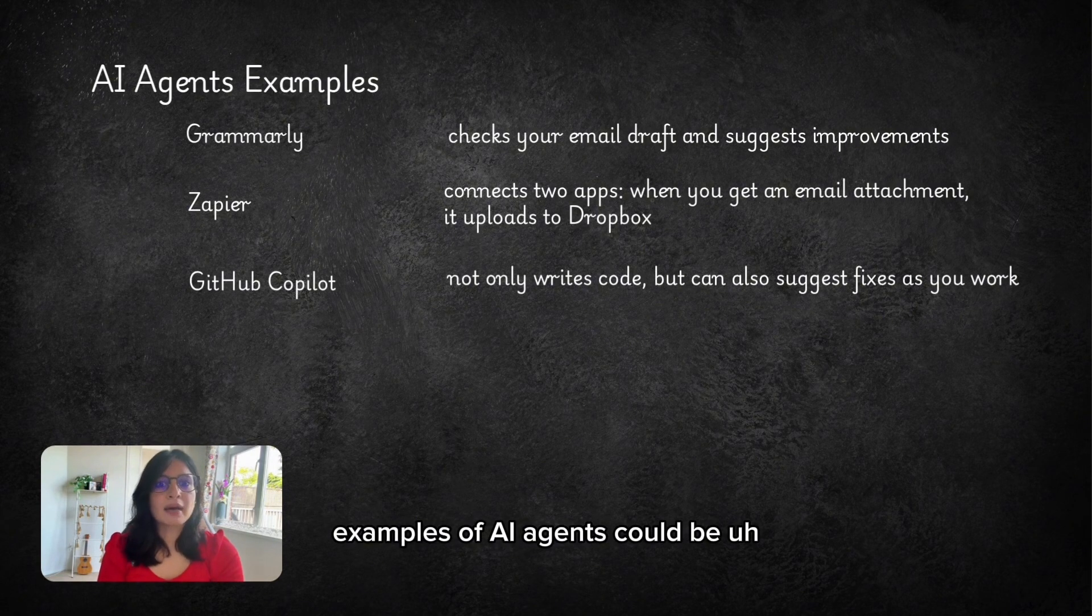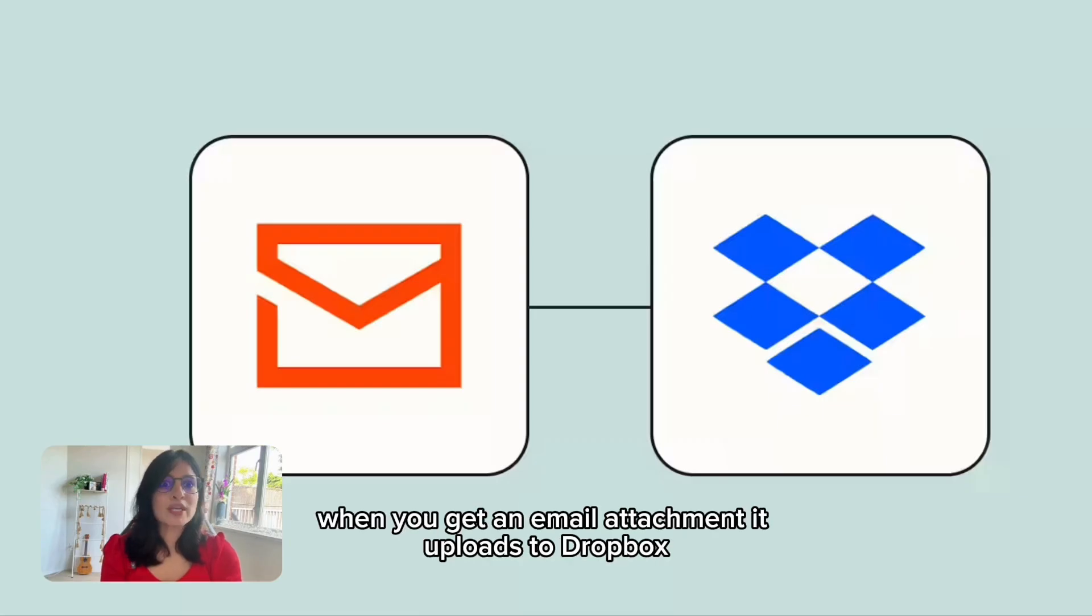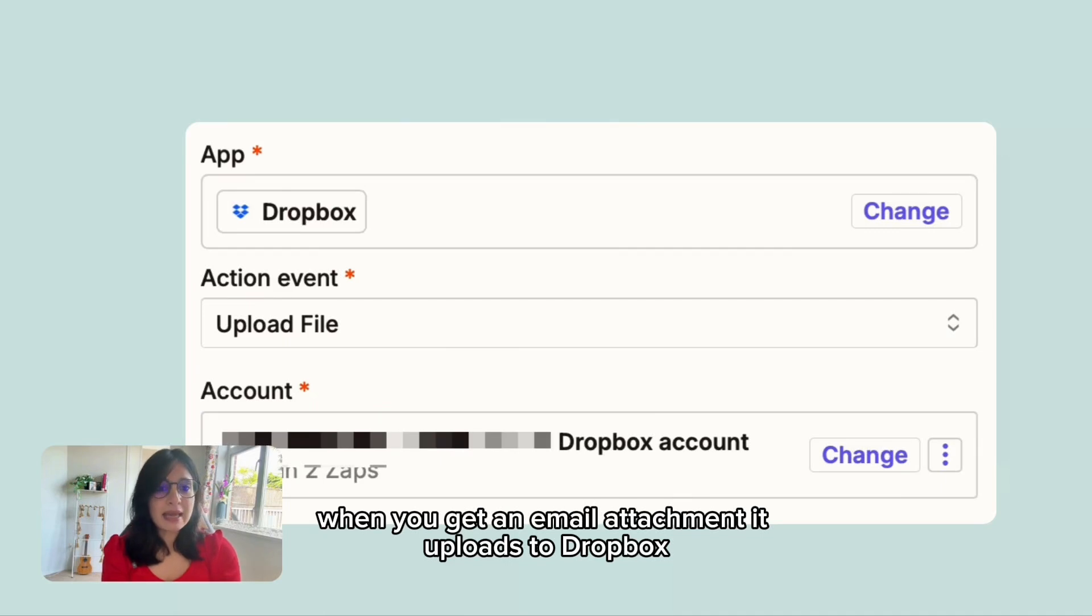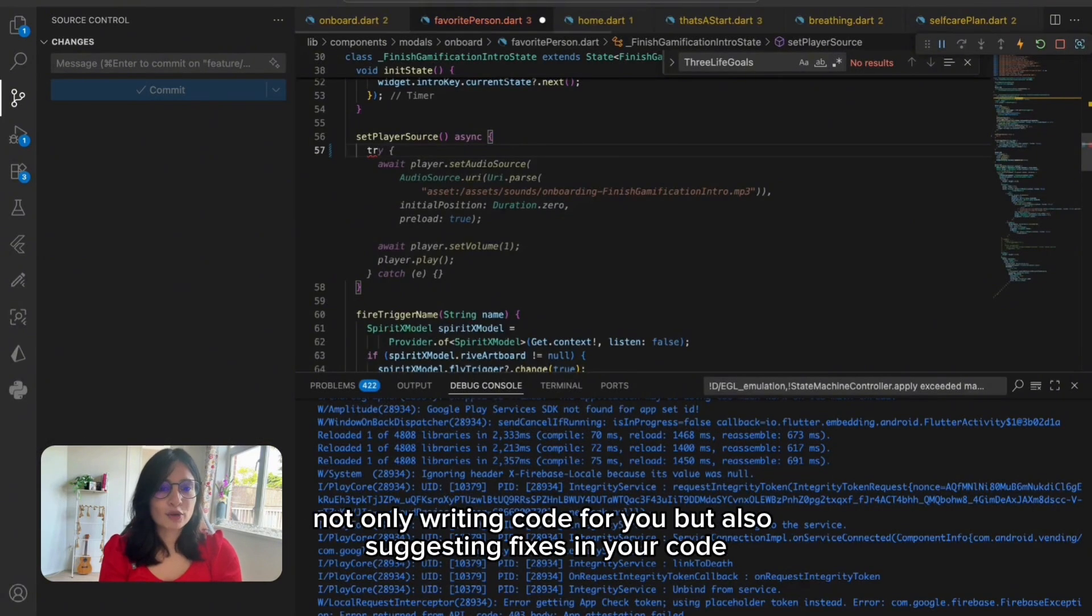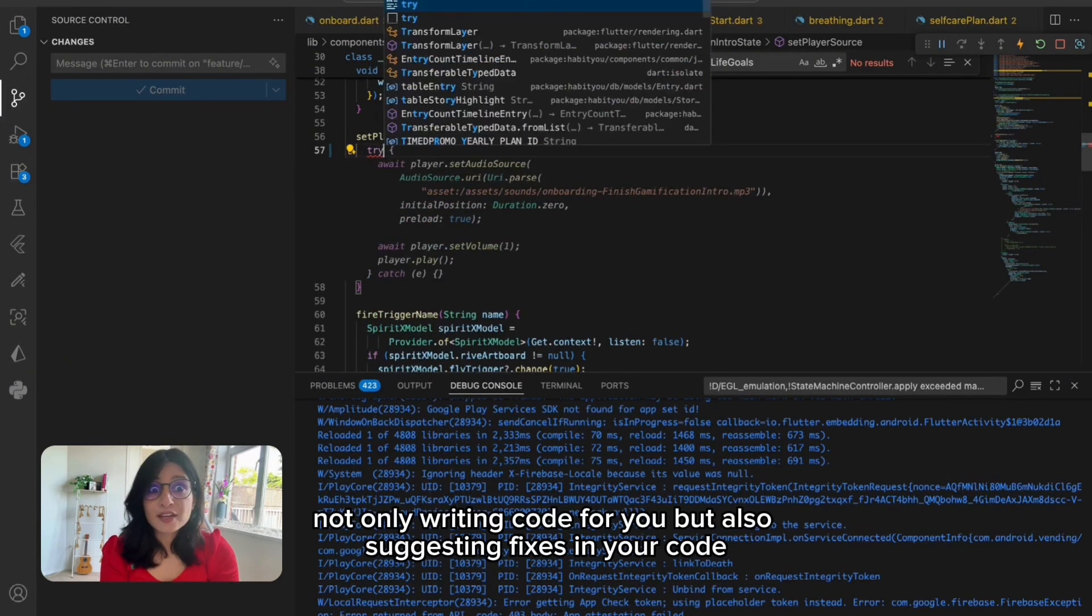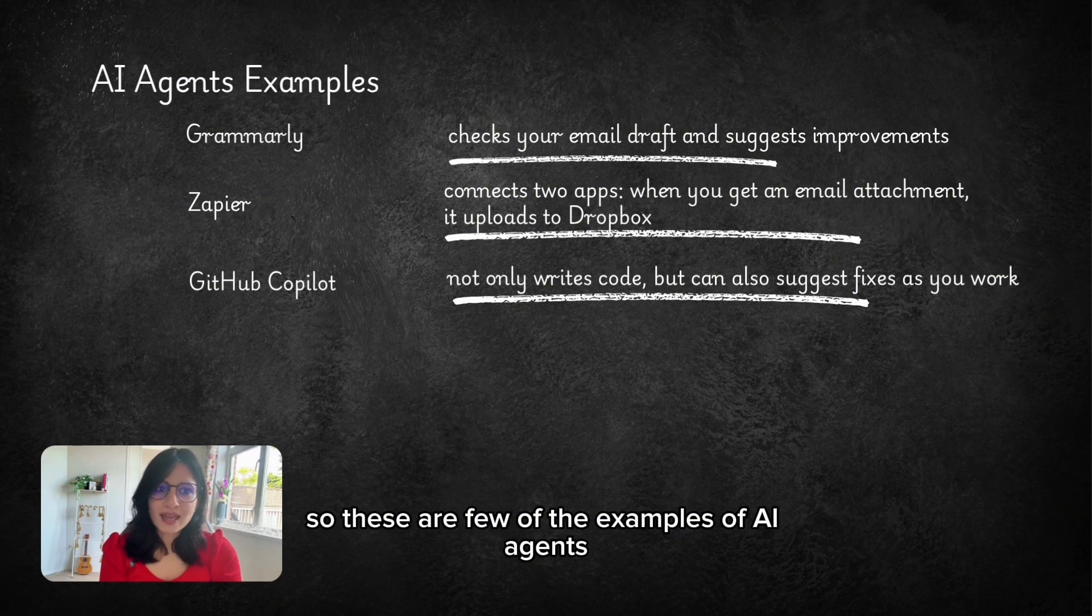Examples of AI agents could be Grammarly checks your email draft and suggests improvements. Zapier connects two apps. When you get an email attachment, it uploads to Dropbox. Another example could be GitHub Copilot not only writing code for you but also suggesting fixes in your code. So these are a few of the examples of AI agents.